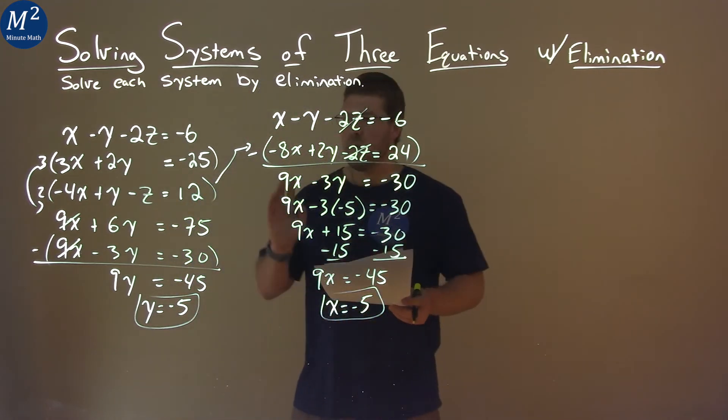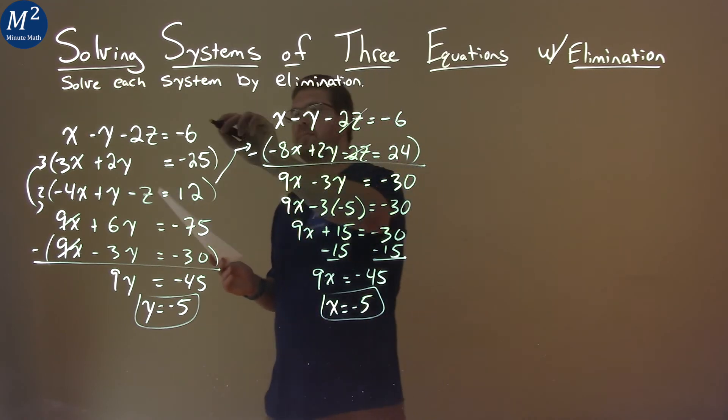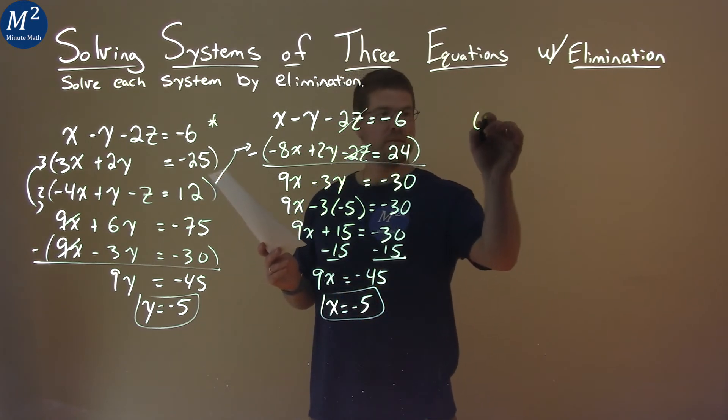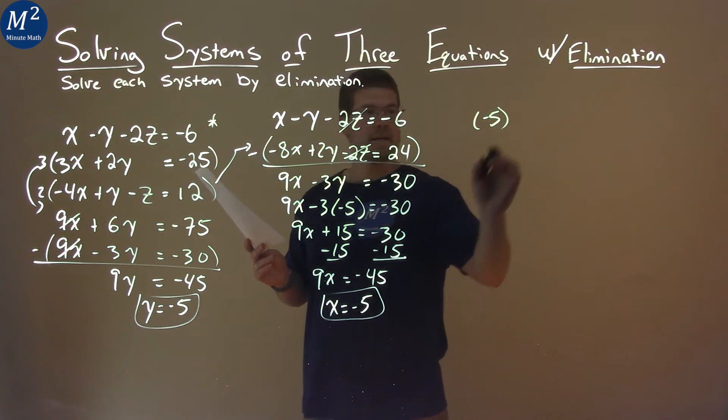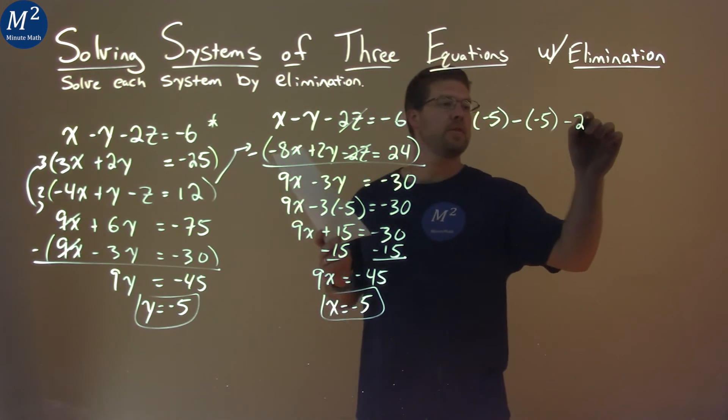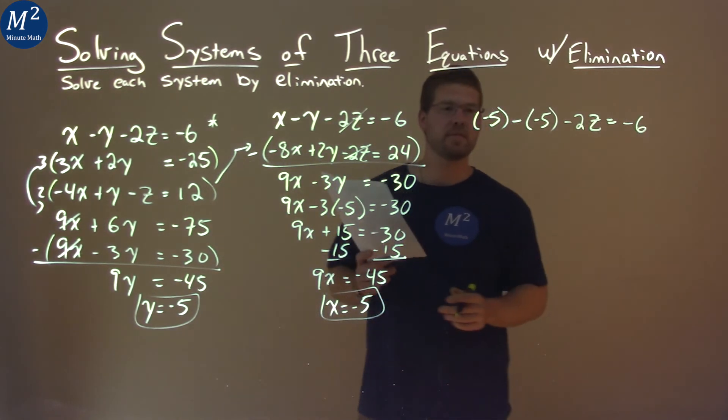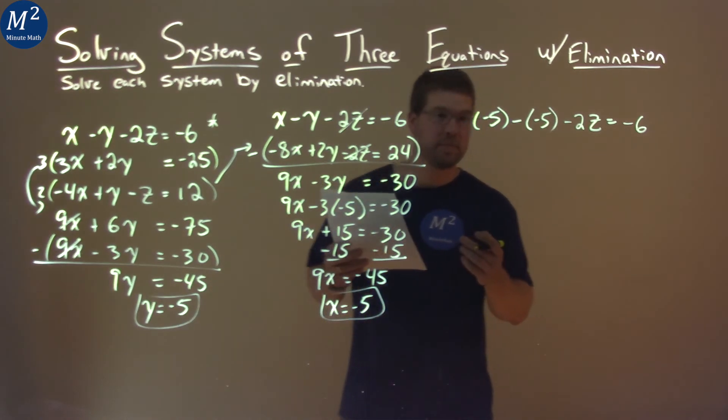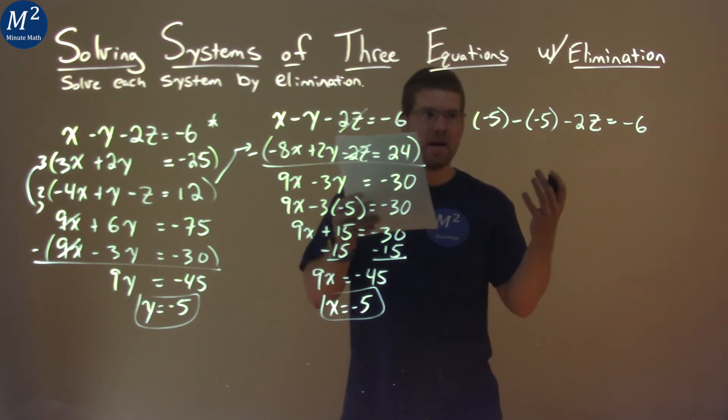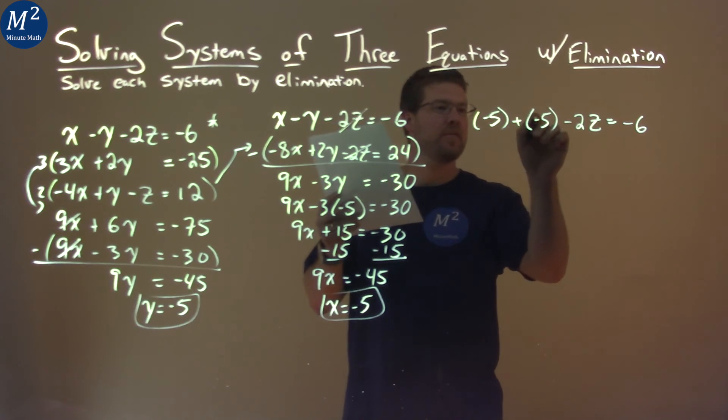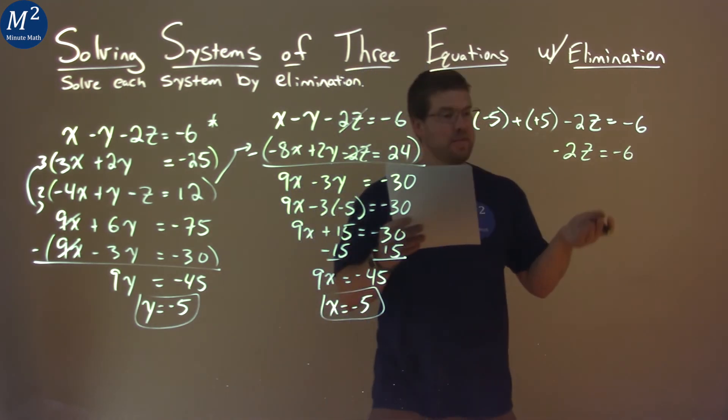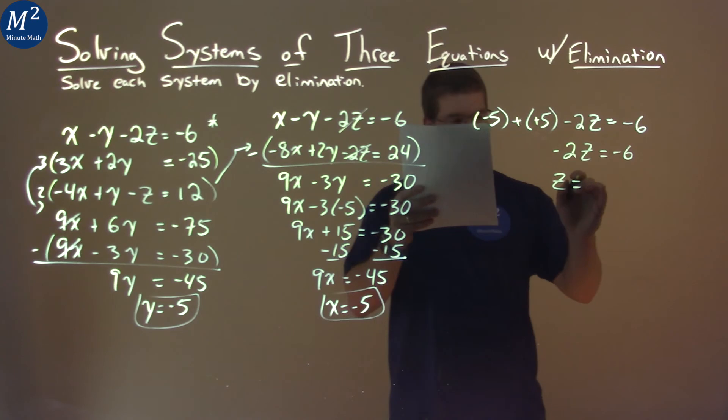We need to find the z value. I'll use my first equation and substitute our x and y values. Instead of x, I have negative 5, minus negative 5, minus 2z equals negative 6. Negative 5 minus negative 5 is adding positive 5, which cancels to 0. So negative 2z equals negative 6. Divide both sides by negative 2, and z equals positive 3.